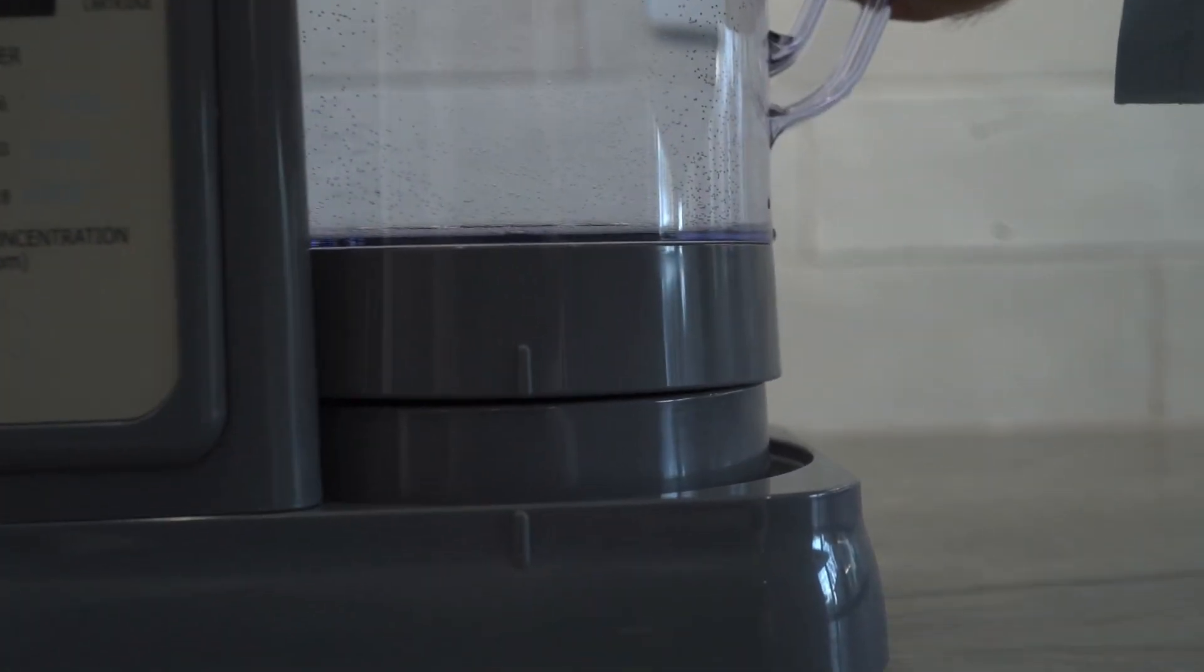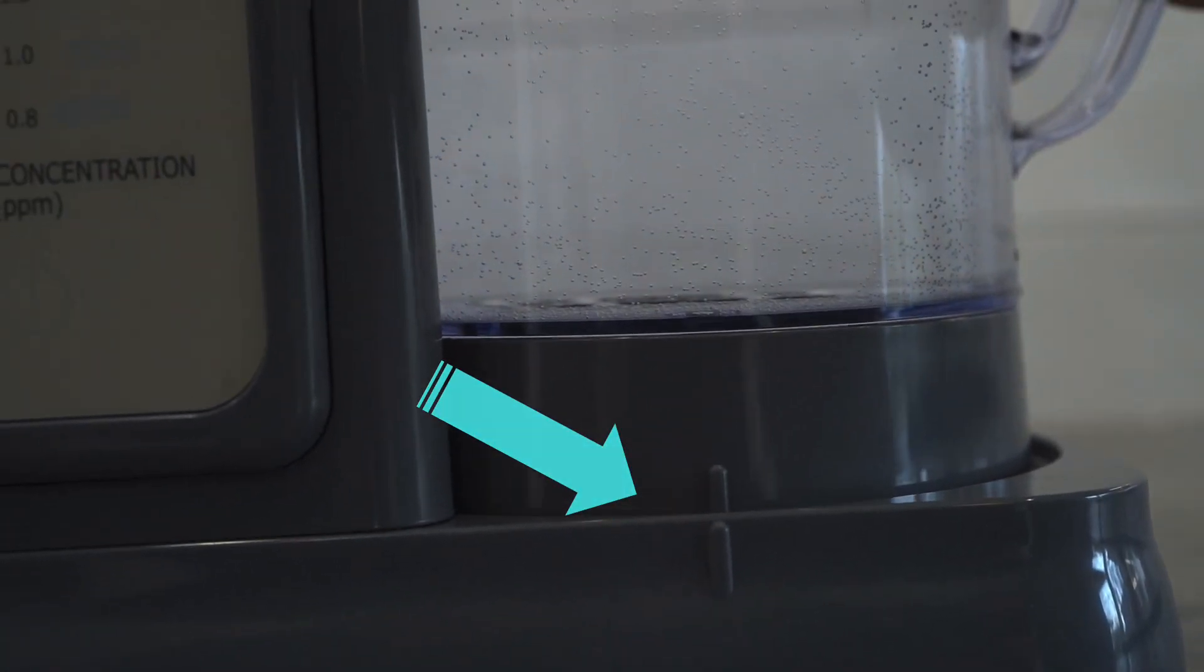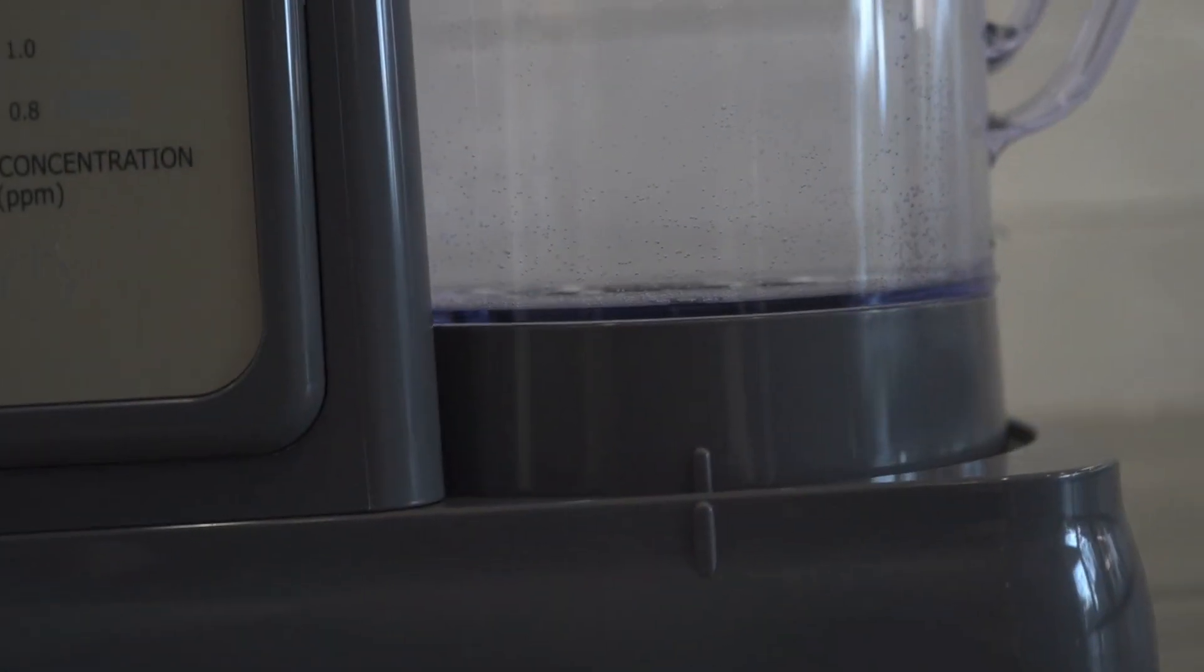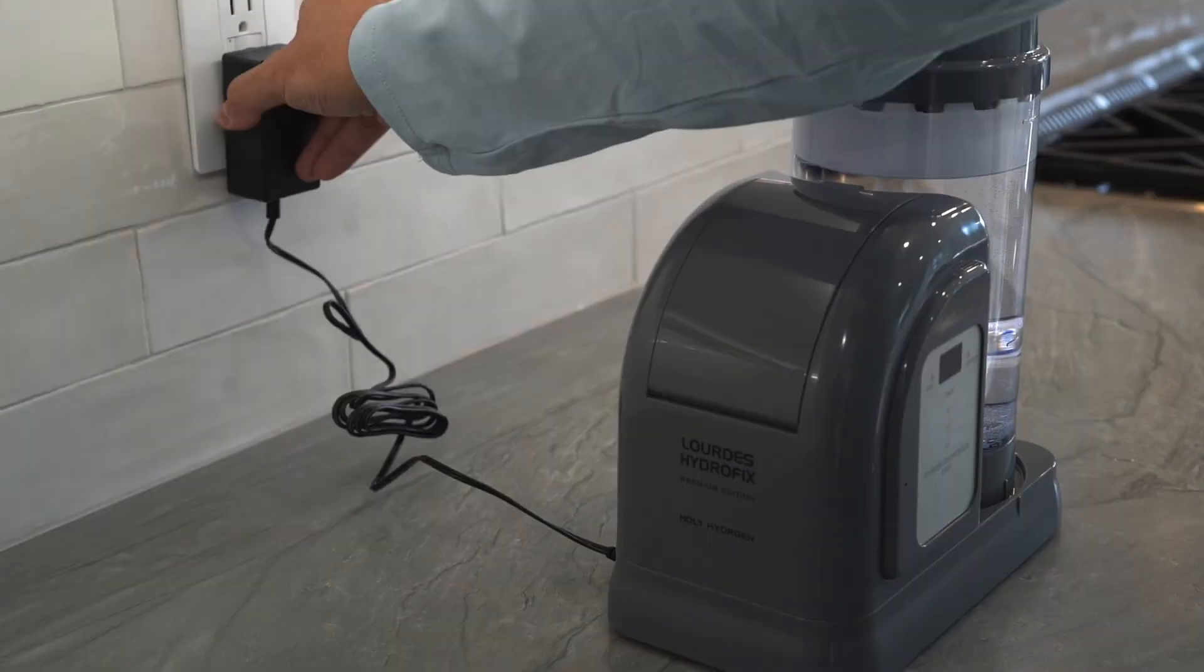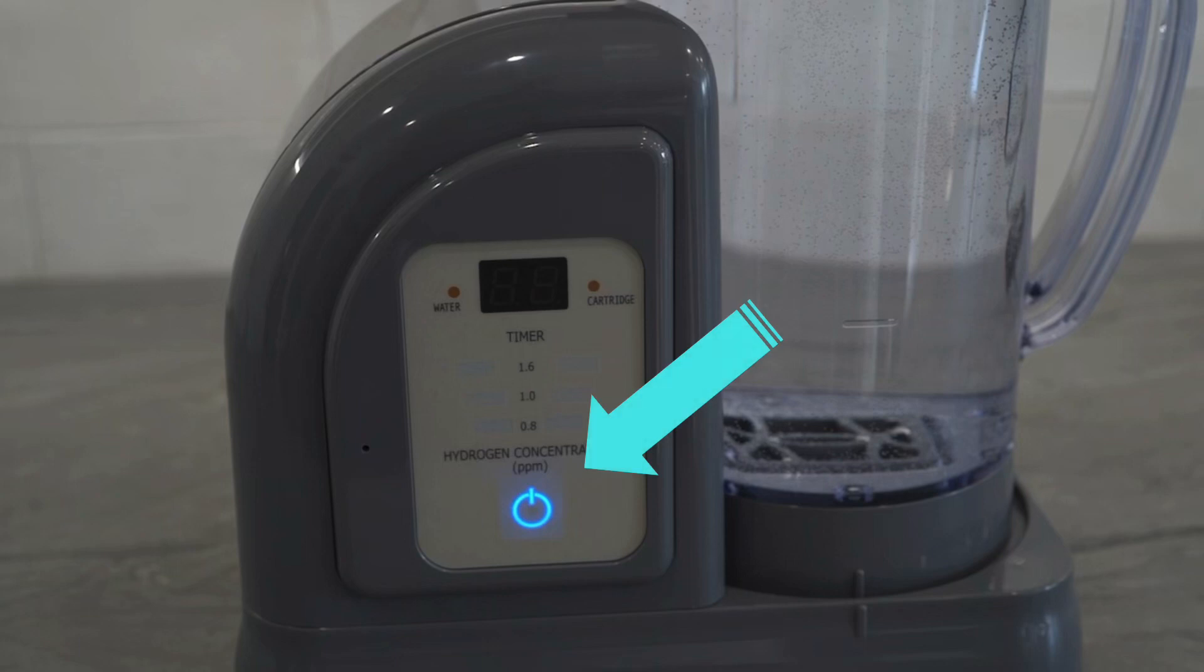Next, replace the pitcher by carefully lining up the placement guides of the pitcher and the pitcher tray and set the pitcher onto the tray straight down. Then, plug in your Lourdes Hydrofix and you will see the glowing blue power button lit.